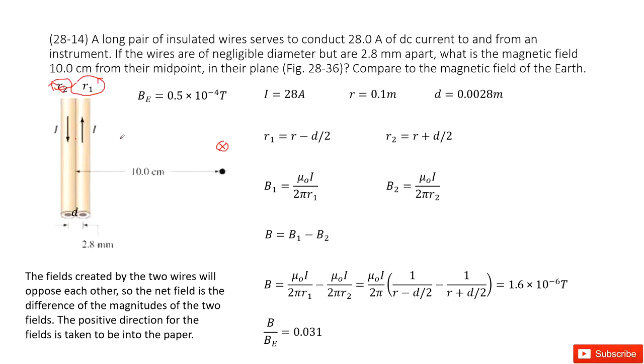So now when we come to this given point, the magnetic field by wire 2 is out of the paper.